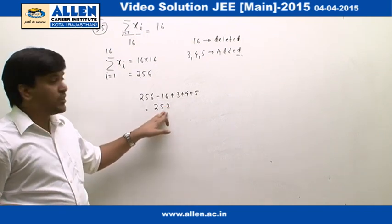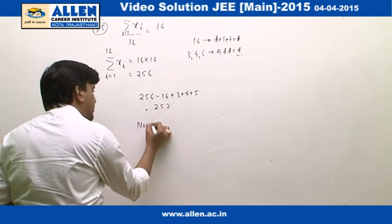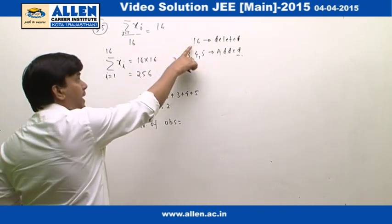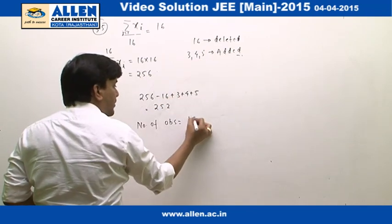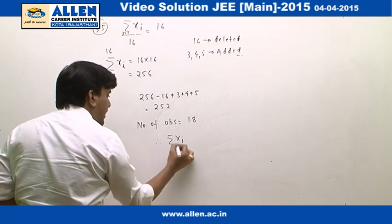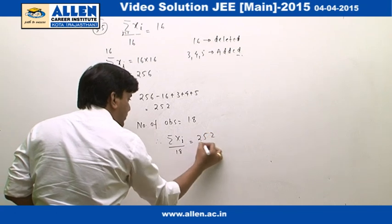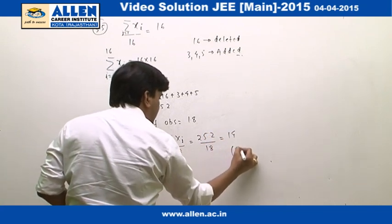Now we can see the new sum is 252 and the number of observations is 16 minus 1, which is 15, plus these three, total 18 observations. Hence the new mean, sigma Xi upon 18, that is 252 upon 18, equals 14, and hence the correct answer is 2.